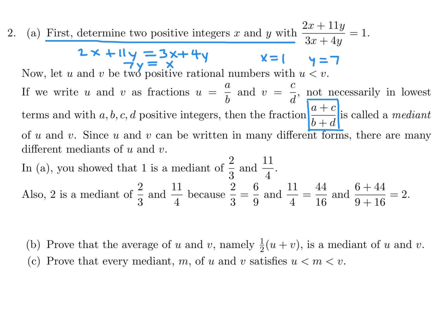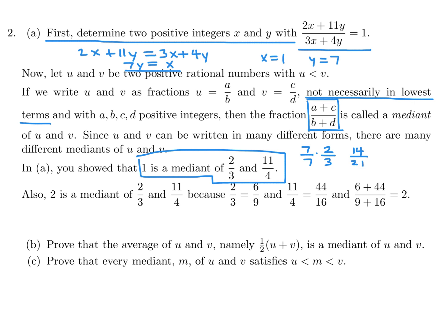Now I want to show that 1 is the median. The key here is 'not necessarily in lowest terms.' So you have to find a multiple that would work. The median is 1. So if I multiply top and bottom of 2/3 by 7, I get 14/21. And 14/21 with 11/4 gives a median of 1, because 14 + 11 over 21 + 4 is 25/25, which of course is 1. So I just showed how 2/3 and 11/4 can have a median of 1.